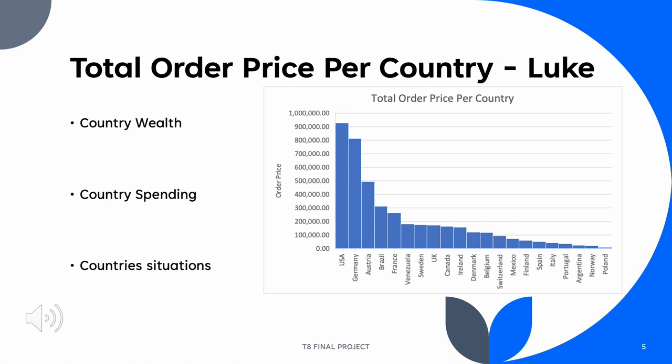This chart points out which countries are the wealthiest. The USA, Germany, and Austria tend to be spending more, which puts emphasis on country spending, as whichever country is willing to spend the most is usually the most wealthy. The ones spending the most are generally in a better economic situation, while the ones that are not spending as much seem to be less wealthy.